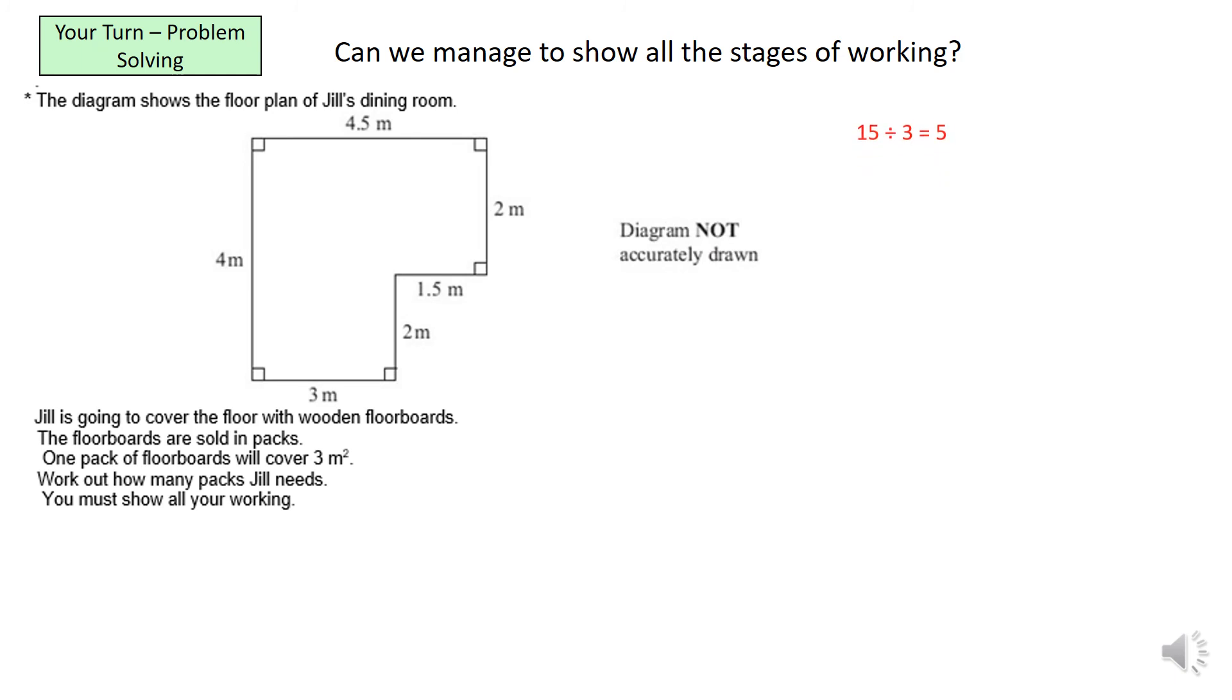Okay, so in short, the total area of the dining room was 15 meters squared. And we're dividing that by 3 because each pack covers 3 meters squared. And that gives us exactly 5. So therefore, Jill needs 5 packs of floorboards. Okay? Well done if you got that one.